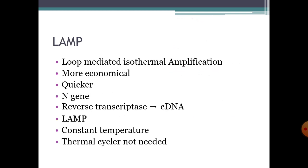Another method is LAMP — loop-mediated isothermal amplification — which is more economical and quicker. This test kit detects the N gene, combining with reverse transcriptase to form complementary DNA, then performs loop-mediated isothermal amplification. It is performed at a constant temperature so a thermal cycler is not needed, but this test is less versatile than PCR.